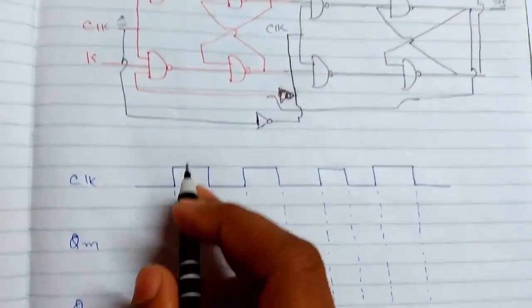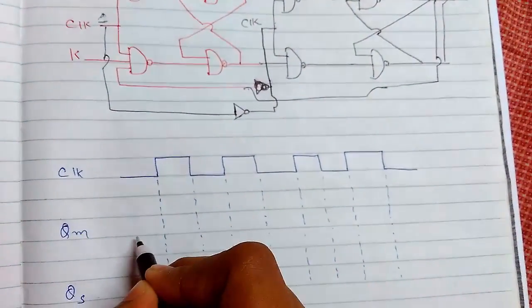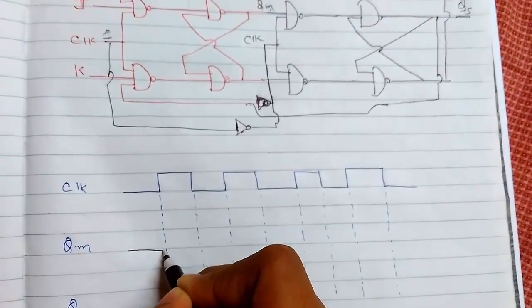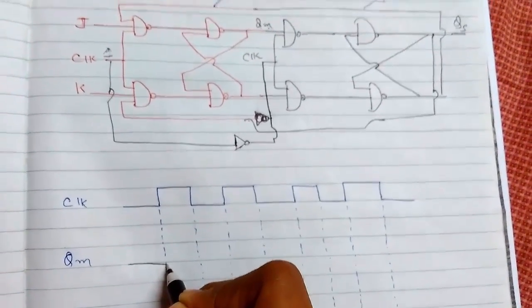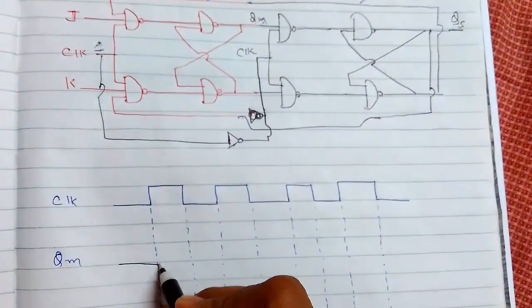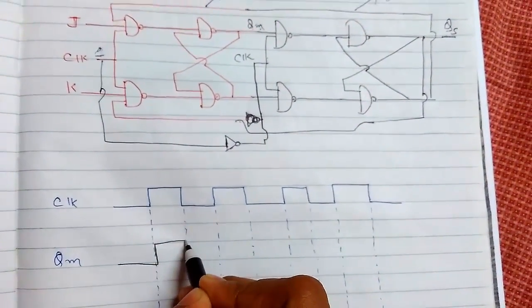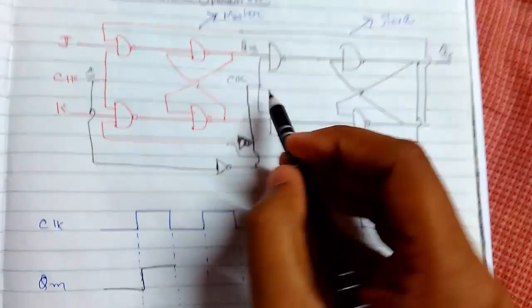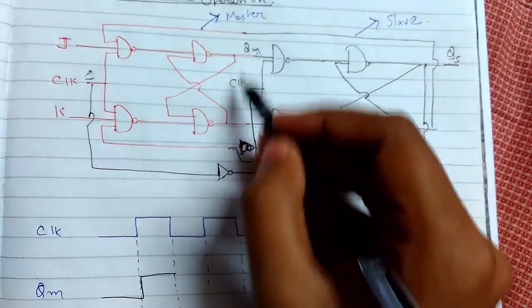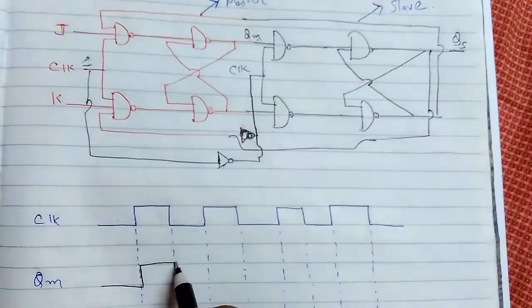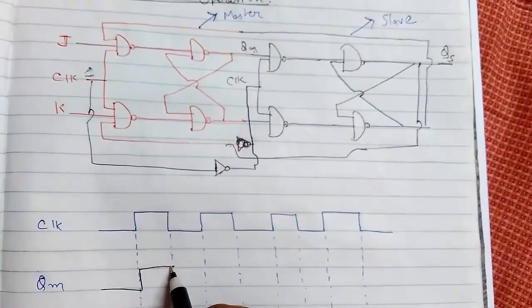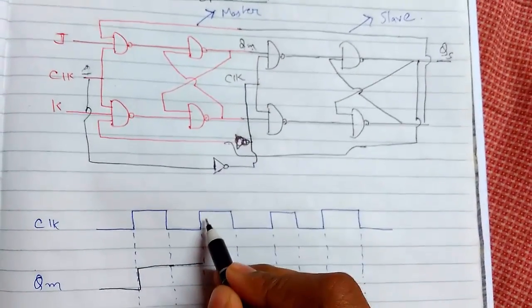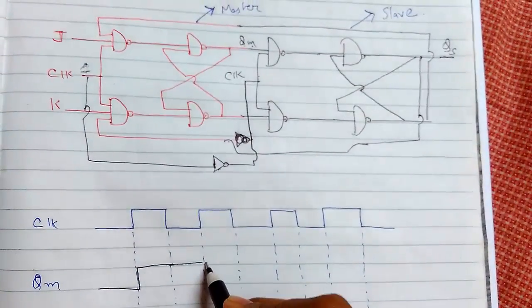We will understand this with the help of this table or diagram. When it is zero, it is zero, and when it is one, we can see that the master part is operating. Now clock has turned to zero because it has stored the Qm part. So the Qm remains same. For zero, the value is stored. Now when this changes to one again, this will change to zero.